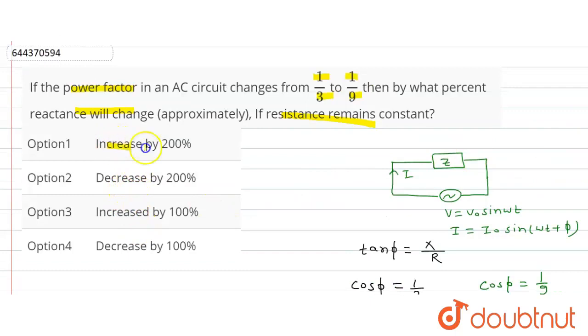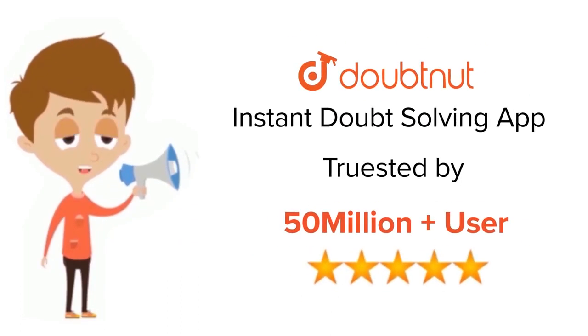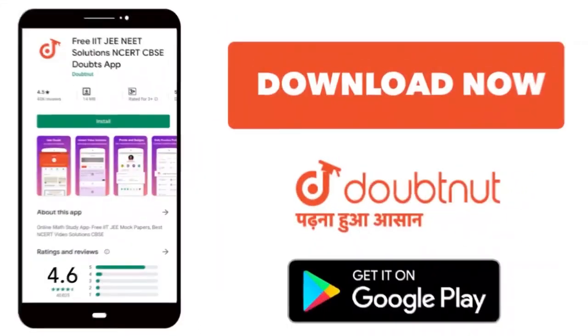So this percent is required for this question, meaning increase by 200 percent. Thank you. For class 6 to 12, IIT-JEE, and NEET level, trusted by more than 5 crore students, download Doubtnut app today.